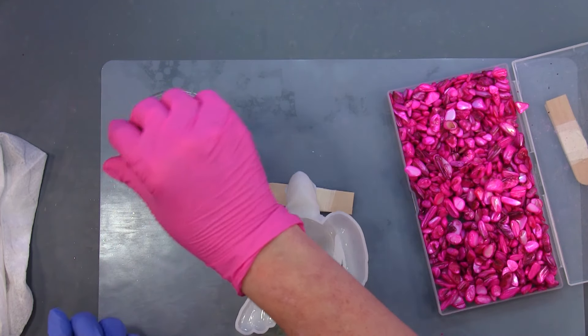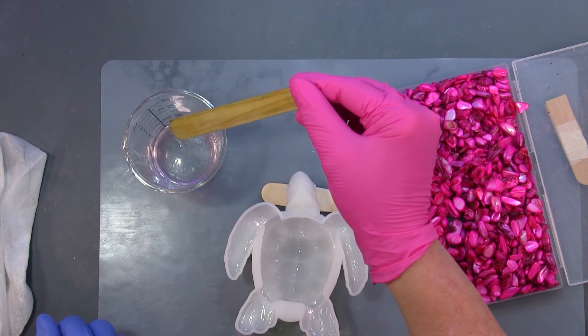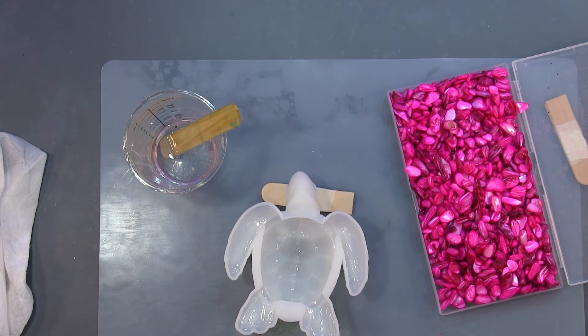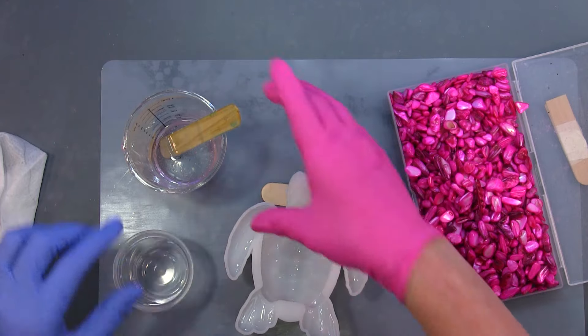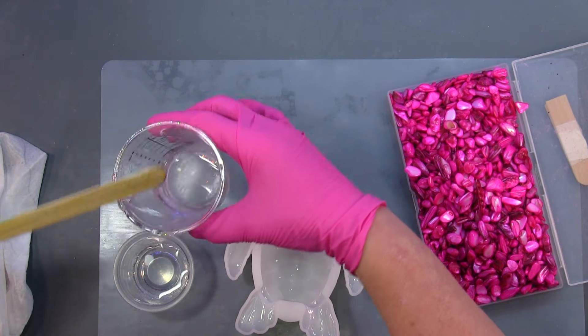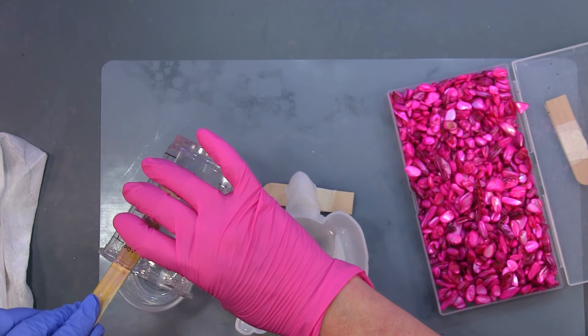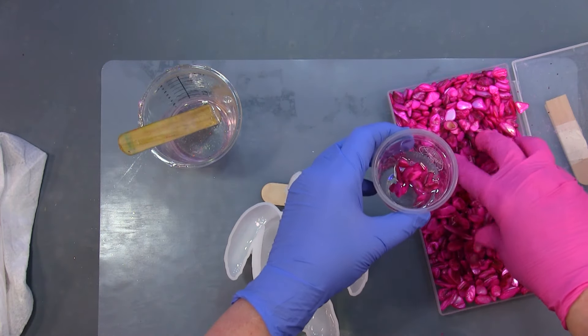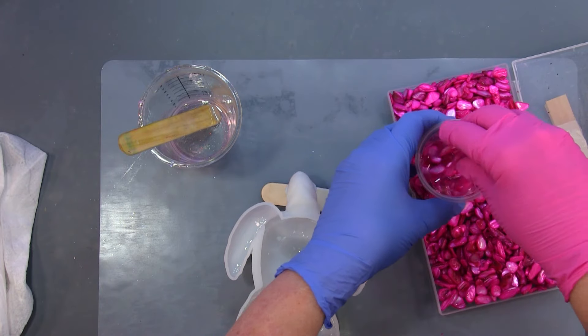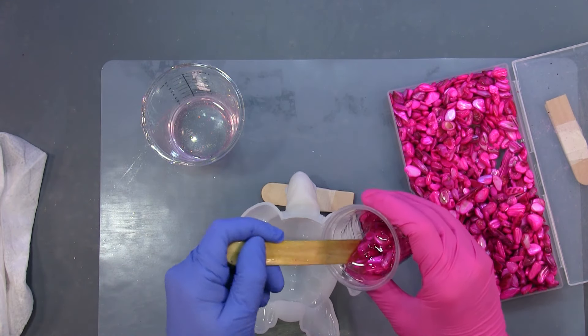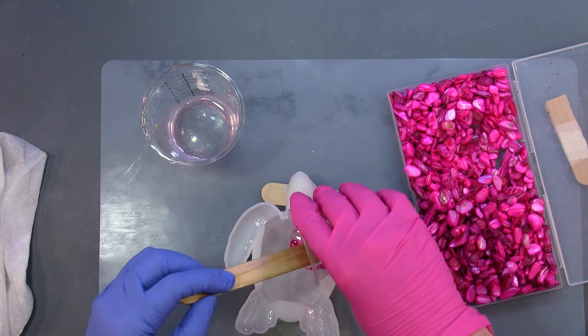So I have two ounces of resin here. I don't know if it's going to take that much. I'm going to pour some in a little cup. Let me pour half, I can always add more. So I just want to give them a nice coating and drop that in there like so.